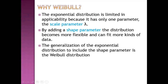The exponential distribution is limited in applicability because it has only one parameter, lambda, also known as the scale parameter. By adding a shape parameter, the distribution becomes more flexible and can fit more kinds of data. The generalization of exponential distribution to include a shape parameter is the Weibull distribution, which has two parameters: one scale parameter and one shape parameter.